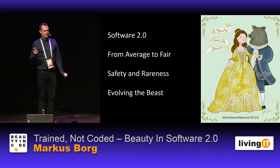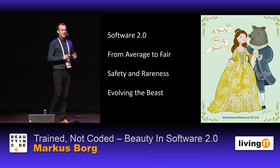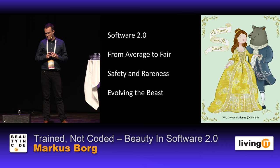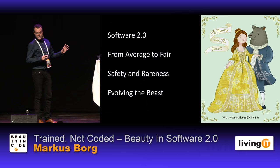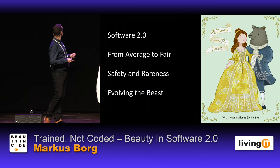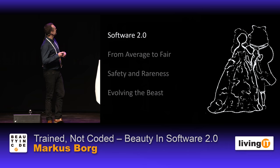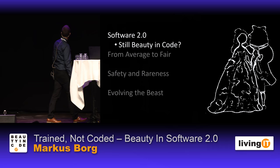So here is the structure of this talk. I've organized it in four parts: I'll start by explaining what I mean by software 2.0, then I will talk about beauty — from average to fair — then I will propose a solution to the problem, which is evolving the beast.